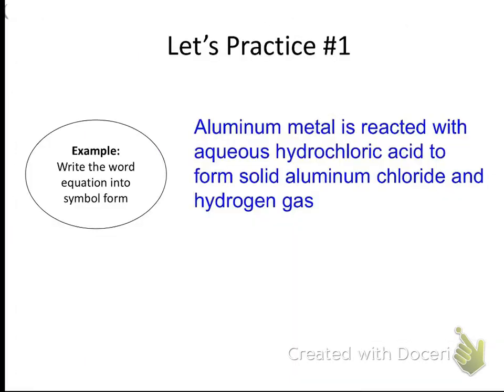So let's get into how we write these equations from words. Alright, so here we have a sentence. Aluminum metal is reacted with aqueous hydrochloric acid to form solid aluminum chloride and hydrogen gas. So we need to put this into a chemical equation. So first we need to underline the things that are involved. So we've got aluminum, and then we've got hydrochloric acid to form aluminum chloride and hydrogen gas.